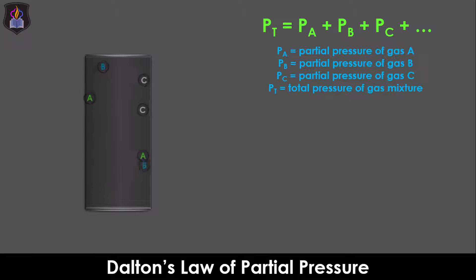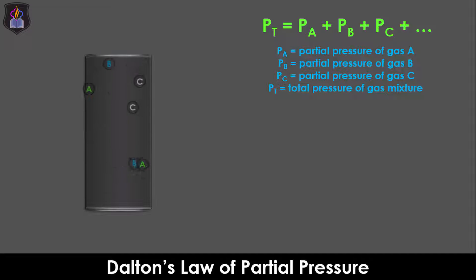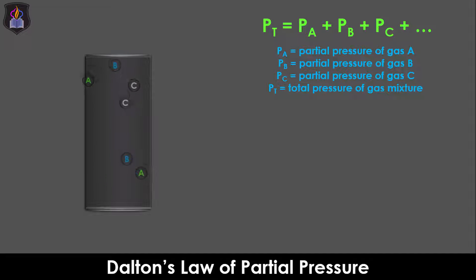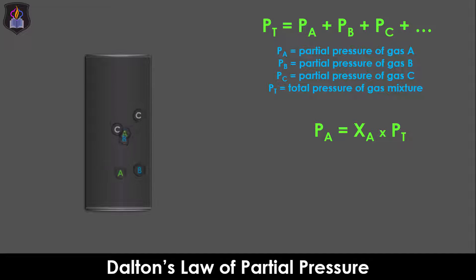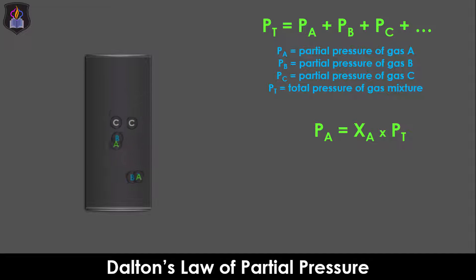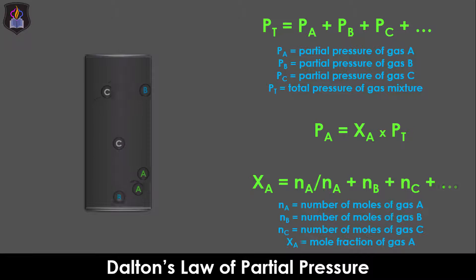Where Pa, Pb, and Pc are the partial pressures of gases A, B, and C respectively, and Pt is the total pressure of the gas mixture. The partial pressure of gas A can be calculated as the product of the mole fraction of the gas, Xa, and the total pressure Pt. The mole fraction of gas A is the ratio of the number of moles of gas A to the total number of moles of all the gases in the mixture, as shown on the screen.